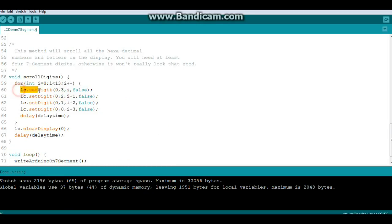So right here we're doing LC.setDigit to chip zero, digit three, value is I, and false. Then digit two, I plus one, false. Digit one, I plus two, false.